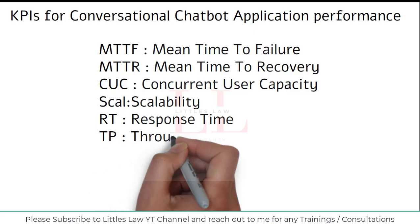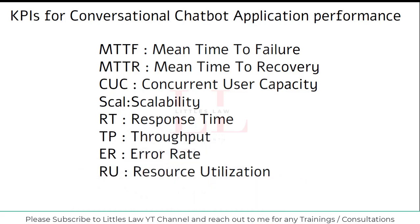Now we'll look at the KPIs — key performance indicators — for the conversational chatbot application. The first is Mean Time to Failure (MTTF), which measures the average time between two consecutive failures of the chatbot. It is calculated by dividing the total operational time by the number of failures. A higher MTTF indicates better reliability and fewer interruptions, suggesting the chatbot is less likely to fail frequently.